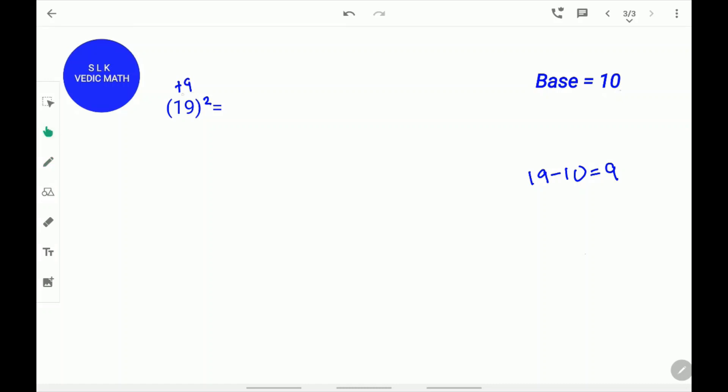Next, add this difference 9 to 19. 19 plus 9 equals 28. 28 is our first part of our answer.